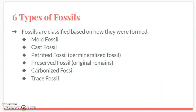We have six main fossil types: mold fossils, cast fossils, petrified fossils, preserved fossils, carbonized fossils, and trace fossils. Each of these fossil types is classified based on how the fossil was formed.